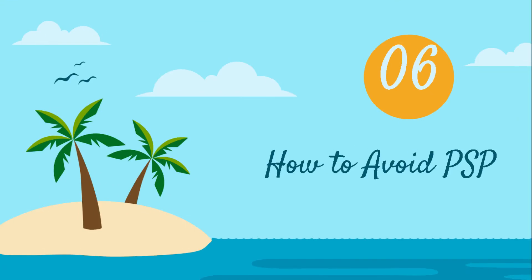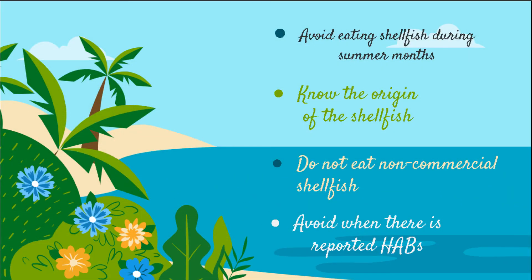How to avoid PSP? There is no antidote for PSP yet, and all cases require immediate medical attention. The least we can do is avoid eating clams, mussels, and oysters during summer months. In Malaysia, summer months start in June and last till September. We must also know the quality and condition of the seafood we are going to eat, especially when on vacation in unfamiliar areas. Thus, we must avoid eating any non-commercial shellfish. Last but not least, we should avoid eating shellfish when HAB cases have been reported.